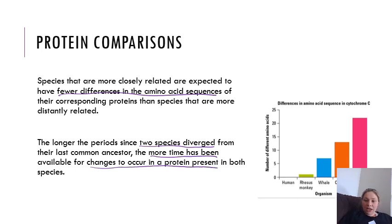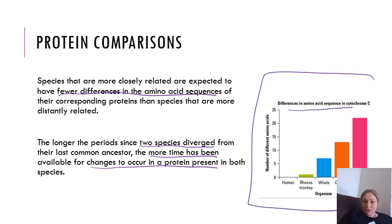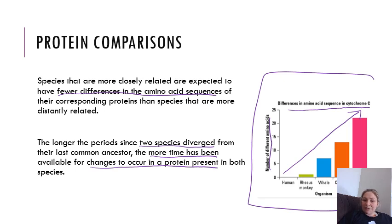We can look at differences in amino acid sequences in cytochrome C, which is present in the electron transport chain and important during respiration. In humans, compared to a rhesus monkey, there are very few differences. A whale has many more differences compared to a human, a chicken has more than a whale, and a fish has the most. So the fish and human are the most distantly related, while the rhesus monkey and human are the most closely related, with fewer than five differences in the cytochrome C molecule.